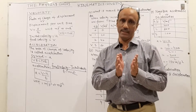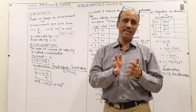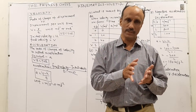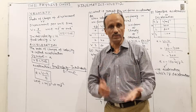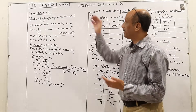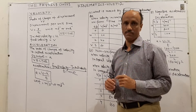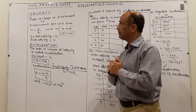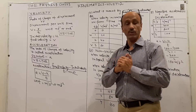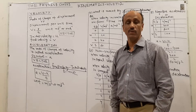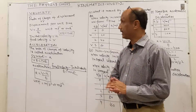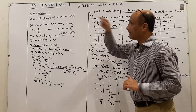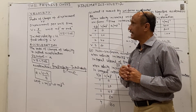Speed was related with the rate of change of distance. Now velocity is the rate of change of displacement. Since displacement is a vector quantity, it means that velocity is also a vector quantity.